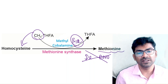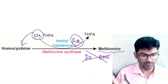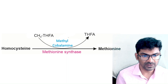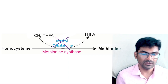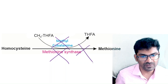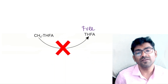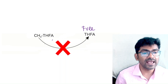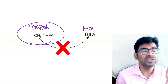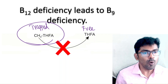In B12 deficiency, methyl-THFA is accumulating — that is the folate trap. Looking at this diagram: if B12 is deficient, meaning methyl cobalamine is deficient, the methionine synthase reaction cannot happen. That means homocysteine to methionine conversion will not happen, so methyl-THFA cannot be converted to free THFA, and folic acid gets trapped in methyl-THFA form.